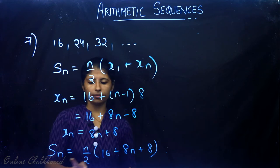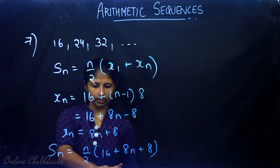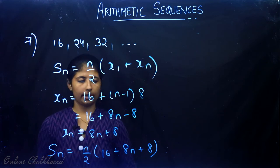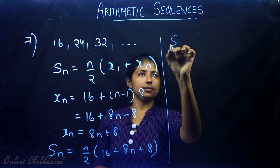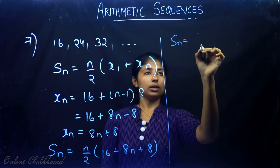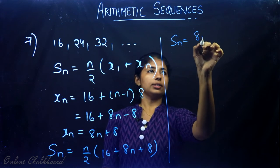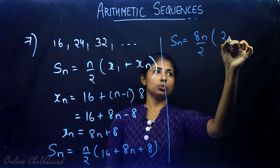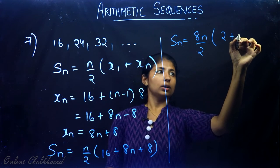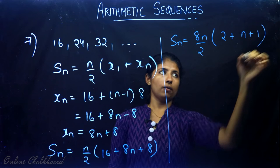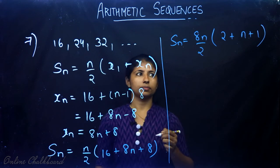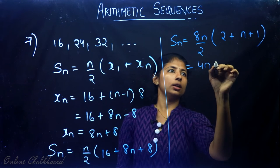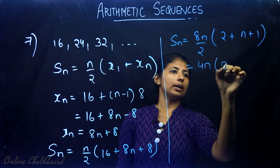Taking 8 as a common factor, Sn equals 8n divided by 2 times (2 plus n plus 1), which simplifies to 4n times (n plus 3).